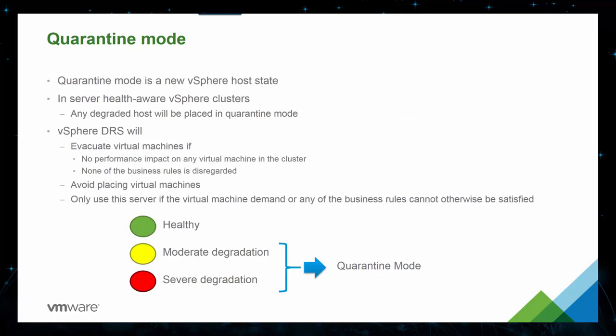The new quarantine mode is a new vSphere host state. Within a health-aware cluster, any degraded host will be placed in quarantine mode automatically. vSphere Distributed Resource Scheduler, DRS, will evacuate VMs if there are no performance impacts, and none if the business rules are degraded.